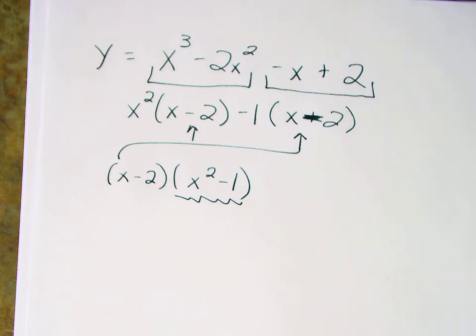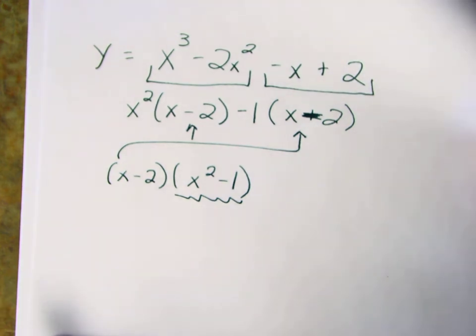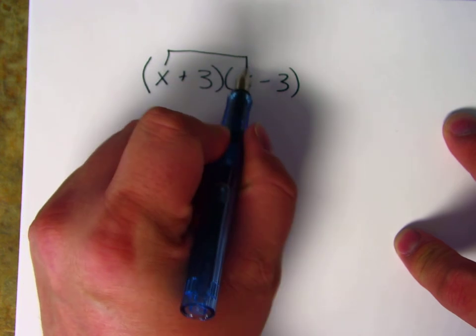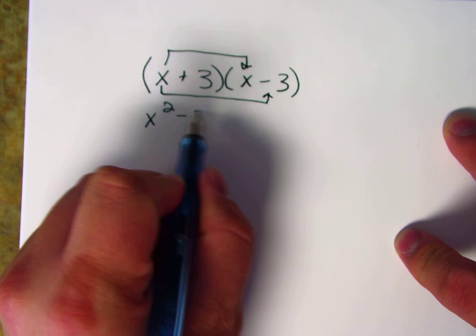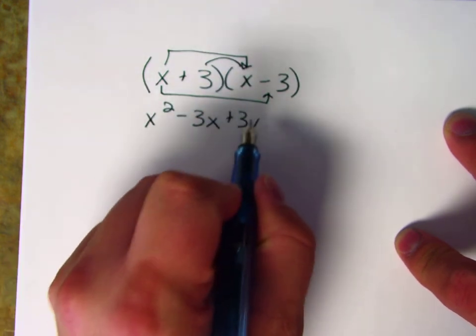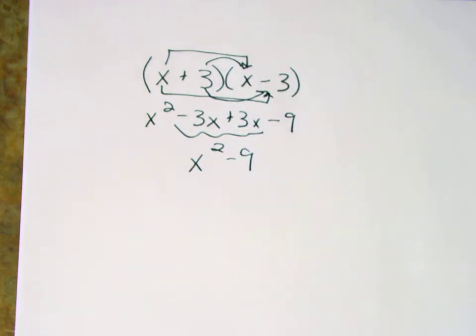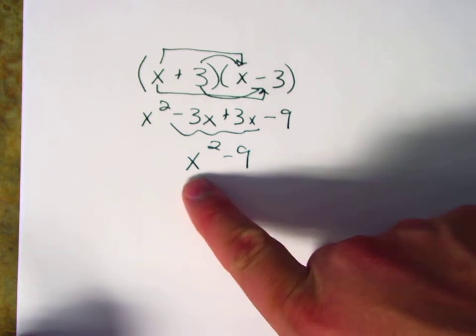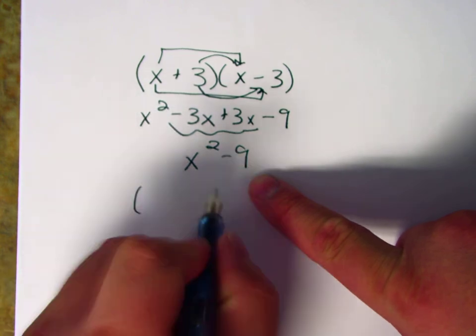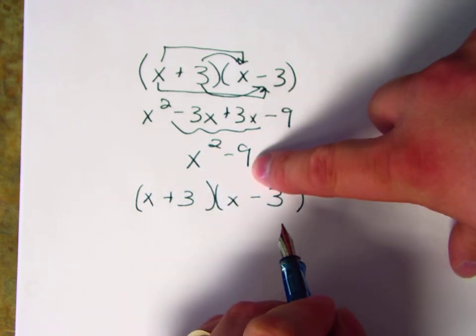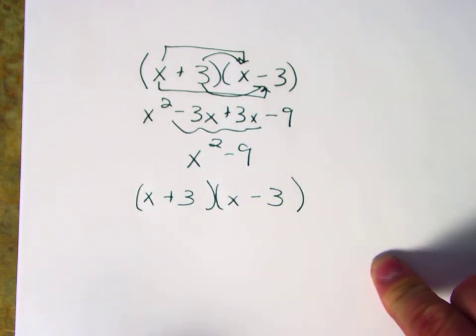We'll come back to that in a second after talking about difference of squares. First, let's look at it in reverse: if I multiply (x plus 3)(x minus 3), I get x squared minus 3x plus 3x minus 9. The middle terms cancel and I get x squared minus 9. Factoring with the difference of squares pattern is just doing this backwards — any time we have x squared minus a perfect square, it factors in this way: (x plus 3)(x minus 3).